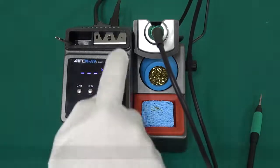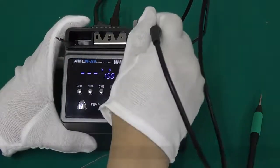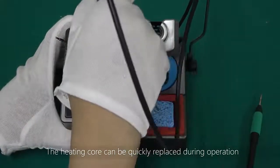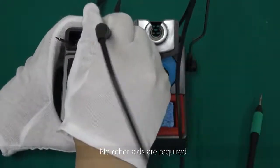Components of iPhone 9. Heating core puller. The heating core can be quickly replaced during operation. No other aids are required.